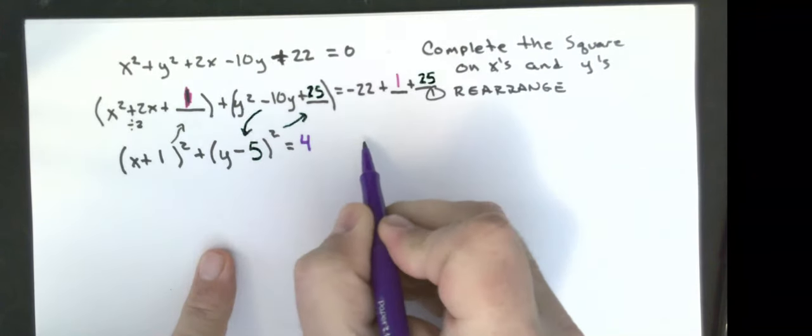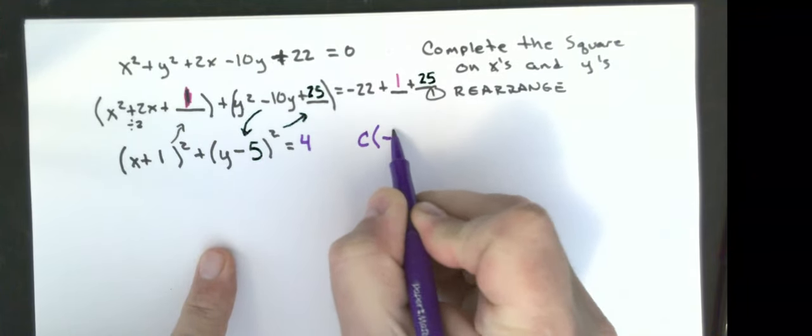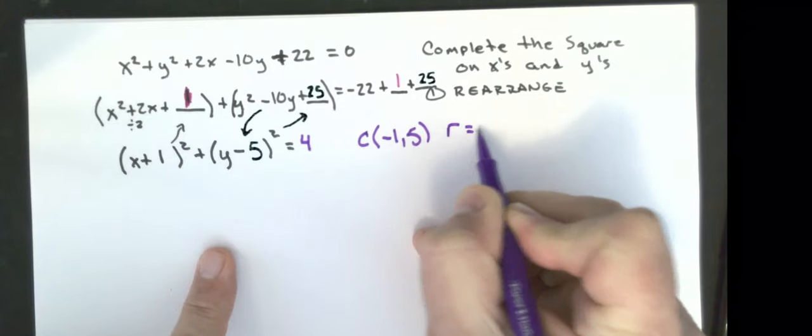So what this gives me is my center is at negative one comma five and my radius is two.